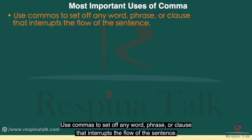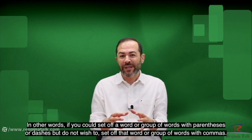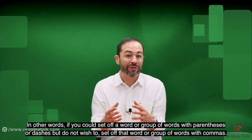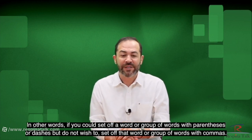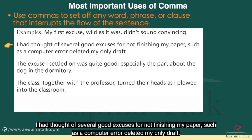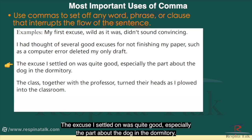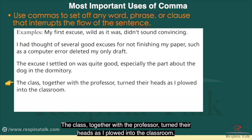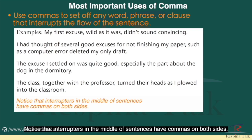Use commas to set off any word, phrase, or clause that interrupts the flow of the sentence. In other words, if you could set off a word or group of words with parentheses or dashes but do not wish to, set them off with commas instead. For example: 'My first excuse, wild as it was, didn't sound convincing.' 'I had thought of several good excuses, such as a computer error deleted my only draft.' 'The excuse I settled on was quite good, especially the part about the dog in the dormitory.' 'The class, together with the professor, turned their heads as I plowed into the classroom.' Notice that interrupters in the middle of sentences have commas on both sides.